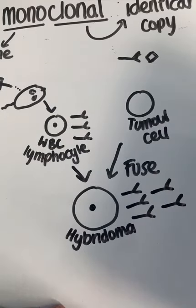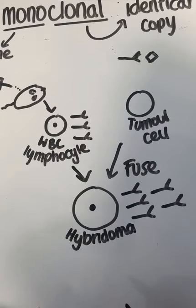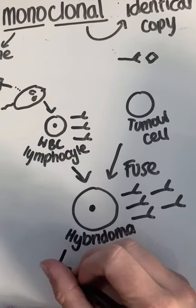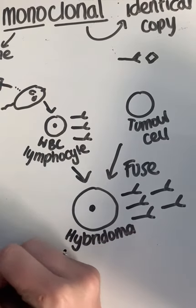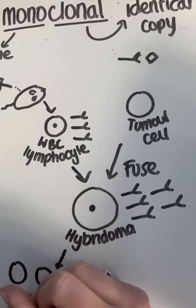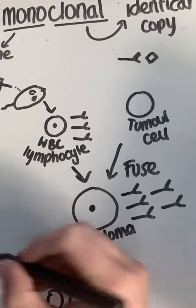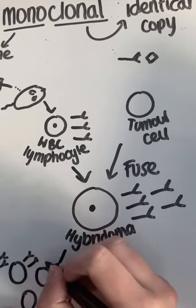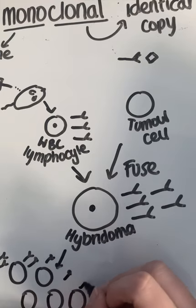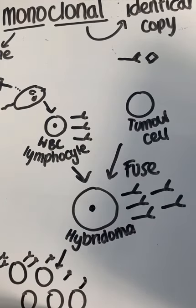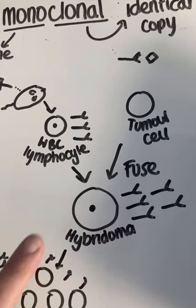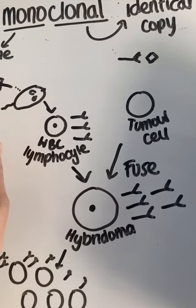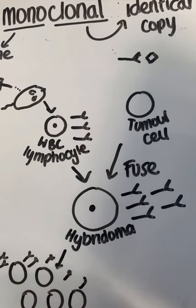The hybridoma will produce the antibodies we want, and it also divides really fast. Over time, this hybridoma divides to give us lots of hybridomas, which all produce monoclonal antibodies specific to the antigen that was originally injected into the mouse.